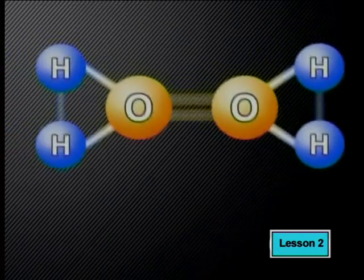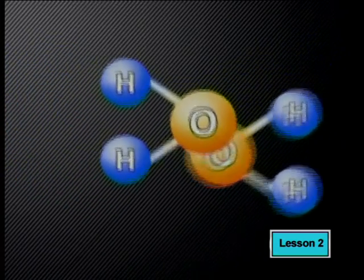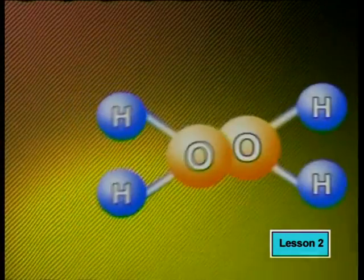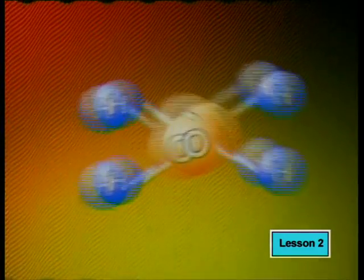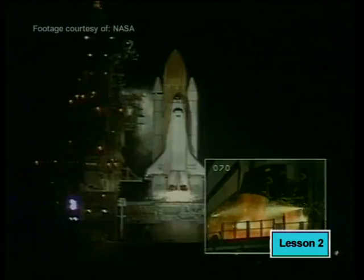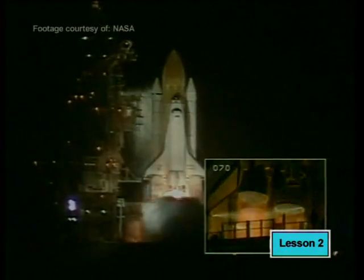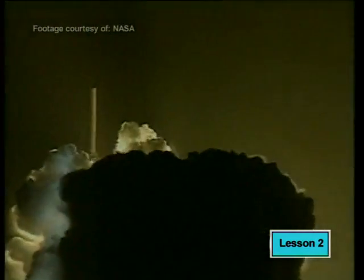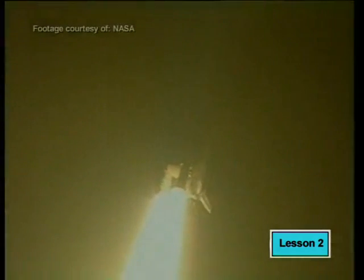Chemical potential energy is stored within the bonds that hold all molecules and compounds together. When chemical bonds break and when new bonds form, the chemical potential energy may be transformed into other forms of energy. Some chemical reactions clearly release energy into their surroundings. We can feel this released energy in the form of heat, see it as light, and even hear it as sound.